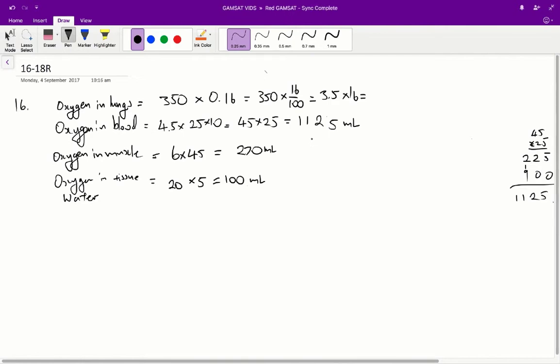So looking at Table 1 for the seal, we've got to figure out the amount of oxygen in each respective tissue or organ. So for the lungs, we have 350 milliliters of volume and 16% of that is oxygen. So we've got 350 times 0.16, and 0.16 is equivalent to 16 on 100. So 350 times 16 on 100 is equal to 3.5 times 16.